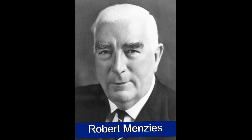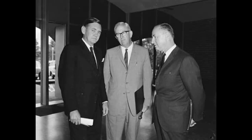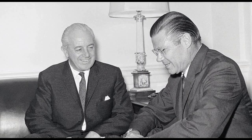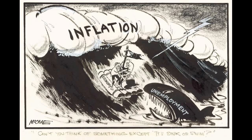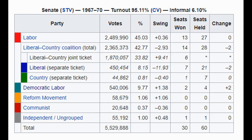Unlike his predecessor Menzies, Holt did not enforce strong party discipline, and dissent began to bubble up within the party, with multiple members becoming very critical of the Prime Minister. This, combined with other controversies, led to poor performance by the government in the 1967 Senate election, in which the Coalition would lose two seats.